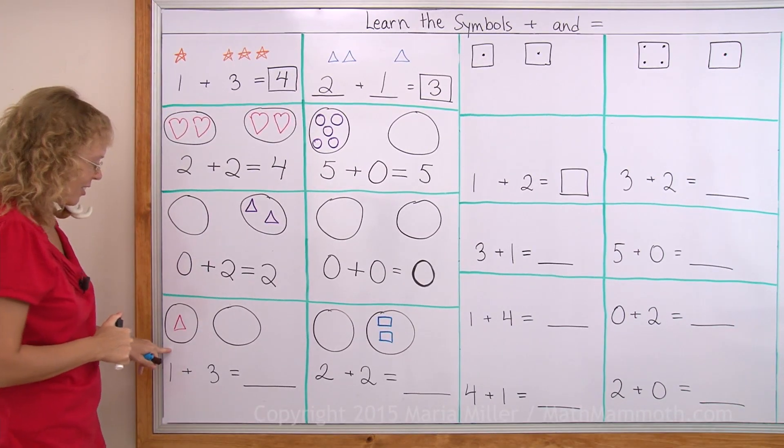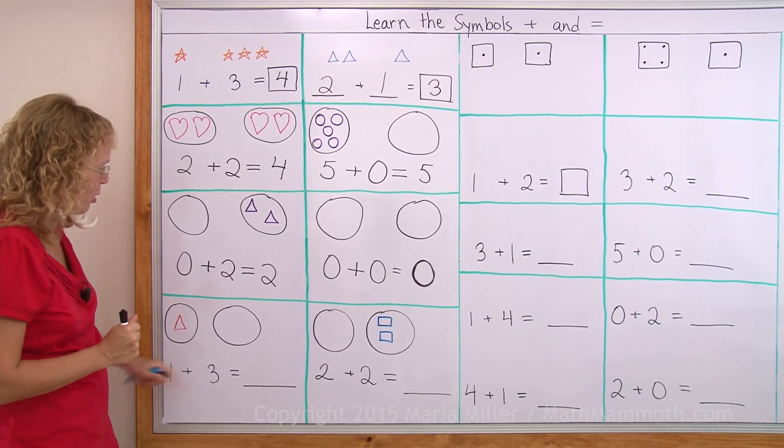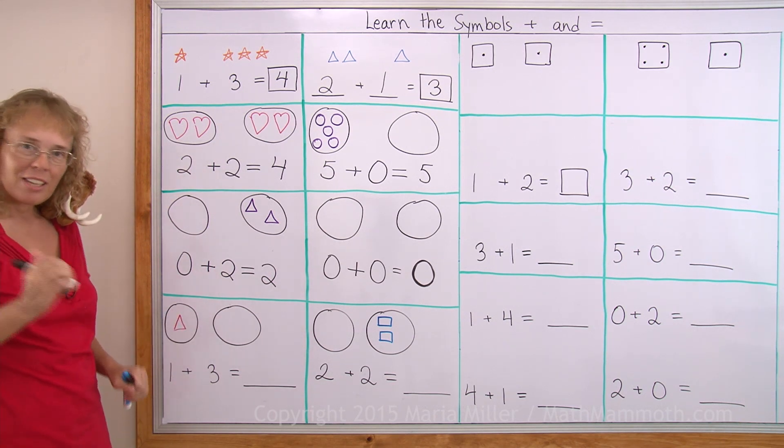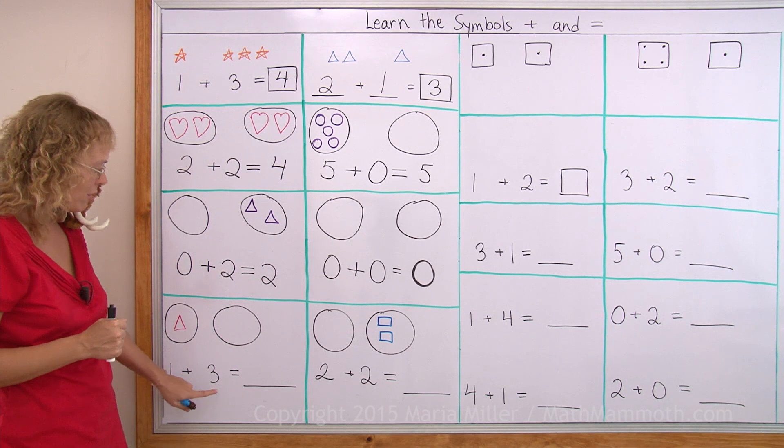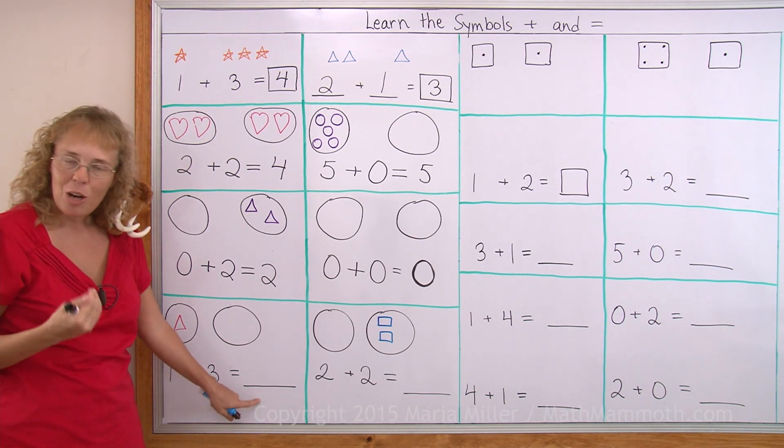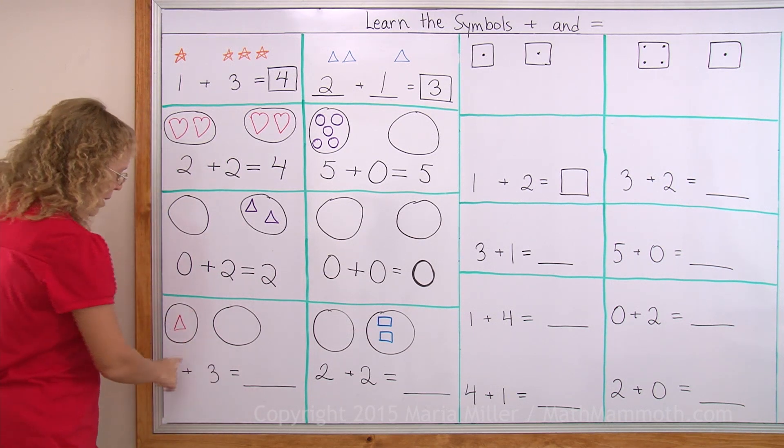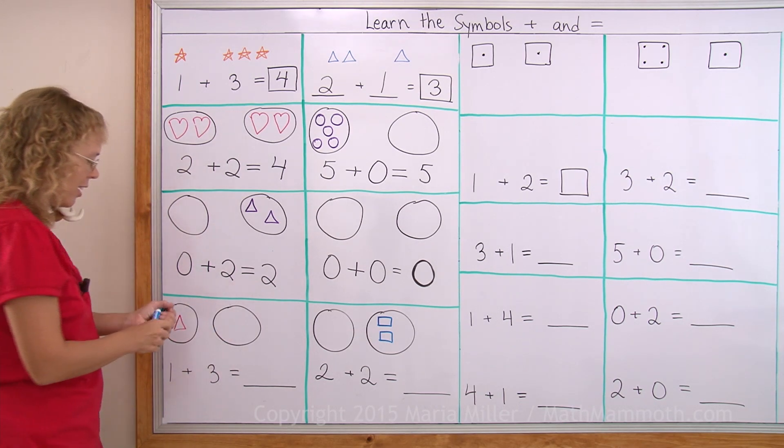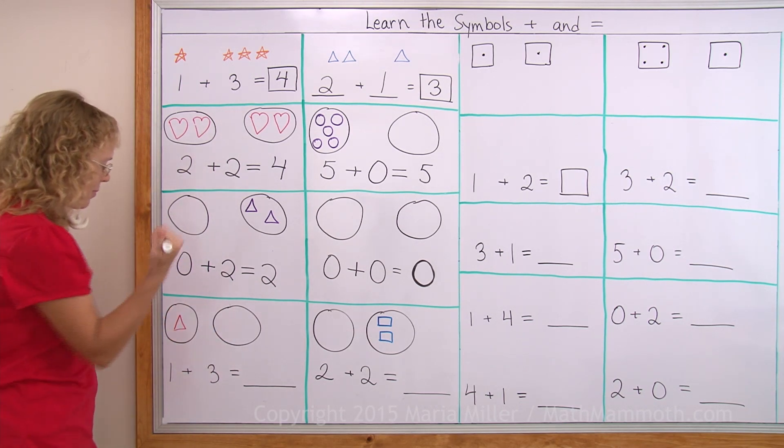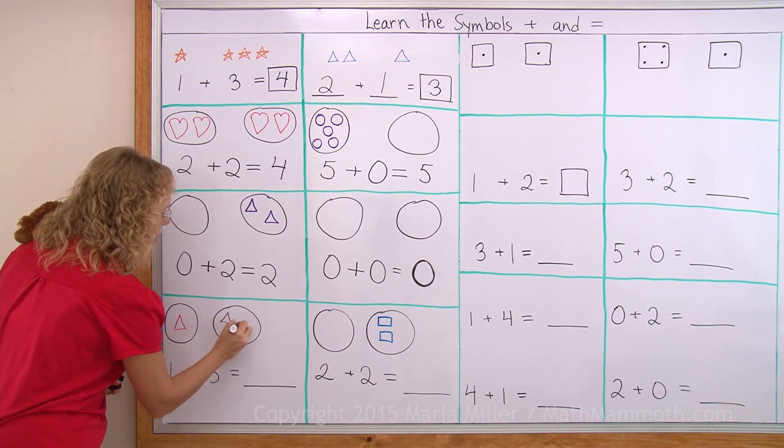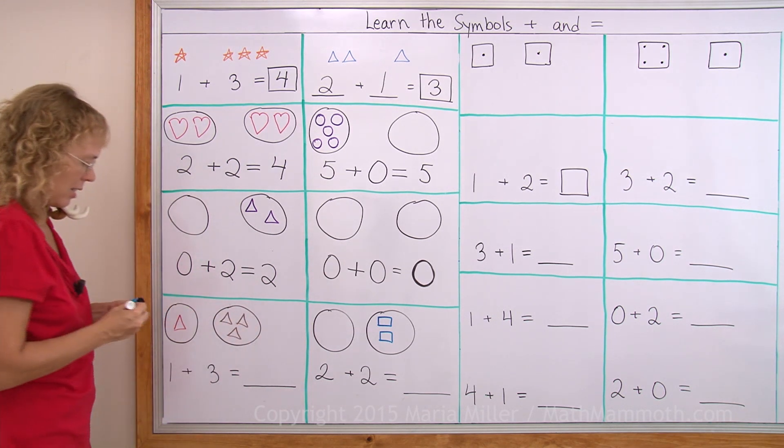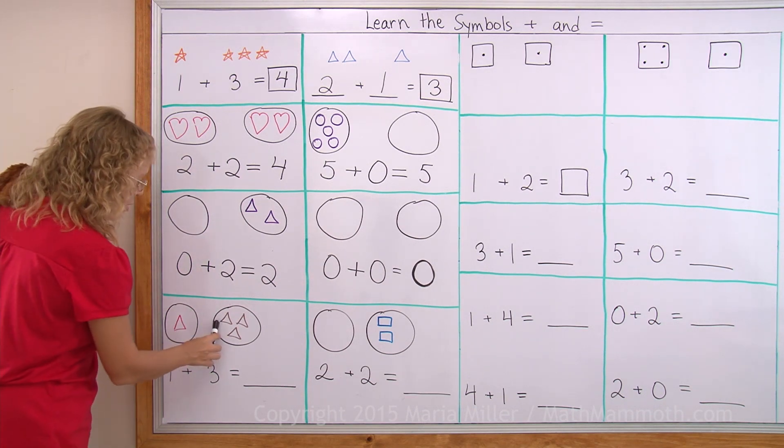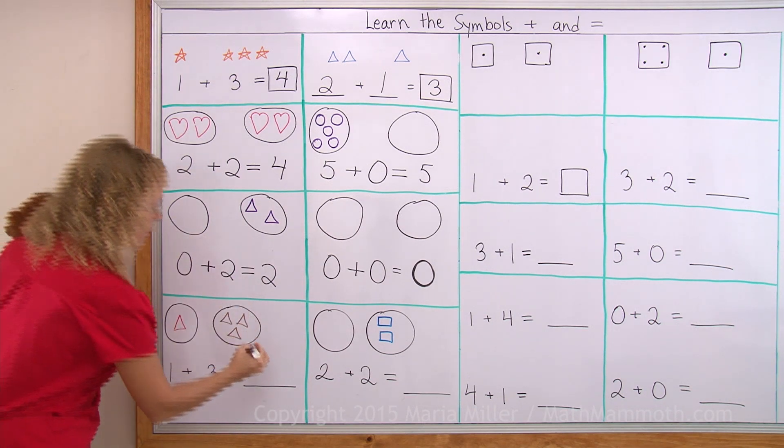Over here we need to draw some more into this other group. The addition problem is given. One plus three equals how many in total? But one is here. One triangle. Three. There's none there. So I need to draw. I draw three triangles. And now it is done. And now I count how many in total? One, two, three, four. The total is four.